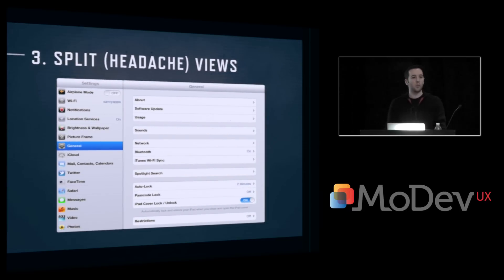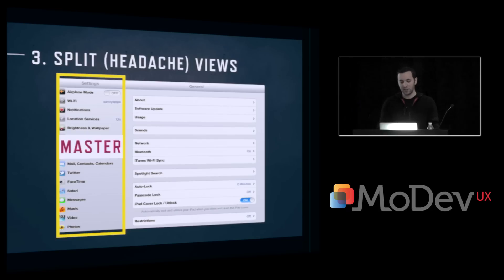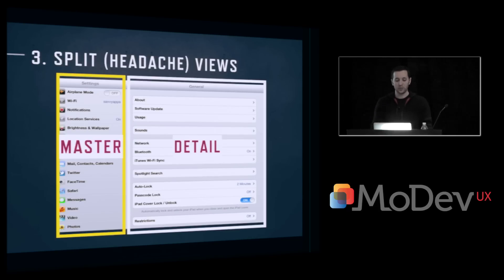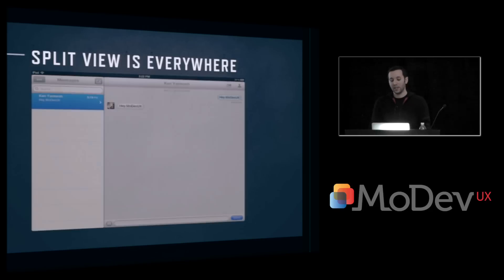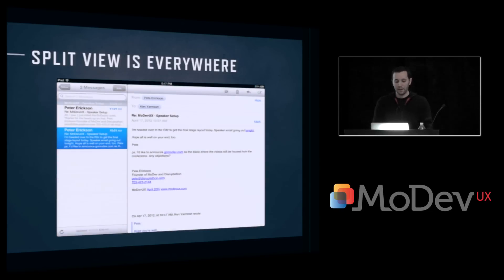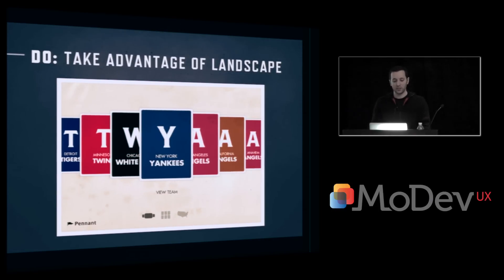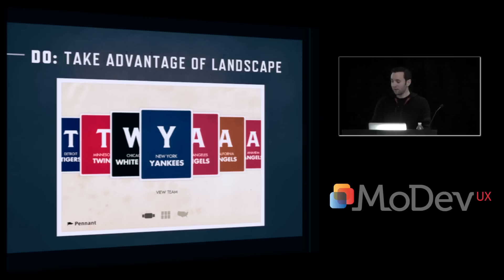The split view is probably one of the more common views Apple uses across its applications. It's defined typically by this master pane on the left-hand side, which then dictates what goes into the detail. We've seen this a lot, particularly in the Settings app, the Messages app, and the Mail app. People have basically defaulted to this when building landscape applications on the iPad. Compare this to the Pennant app — this won a 2011 Apple Design Award, so Apple says this is good design. They have three different perspectives on the same information.